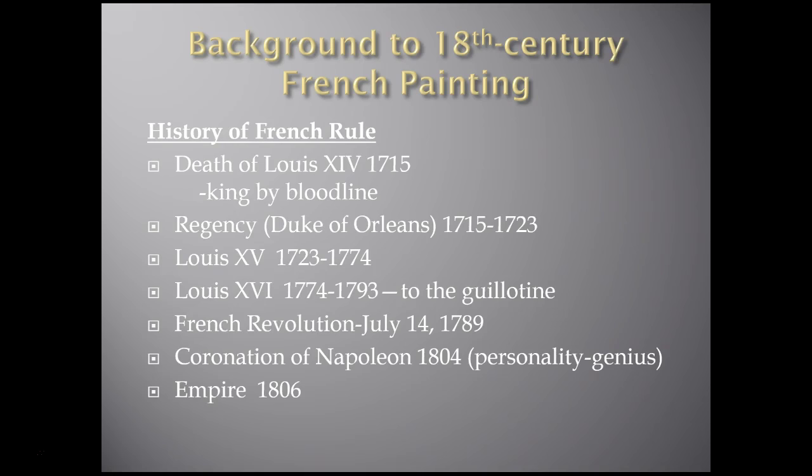Now we're going to go to France — we just spent a little time with English 18th century painting. It's important that we understand some important events in the history of French rule to get a better understanding of the development of French painting during this time. There's the death of Louis the 14th in 1715, where the monarchy was established by bloodline — and we'll see this idea of monarchy being questioned when we look later at neoclassical art. There is a regency established from 1715 to 1723.